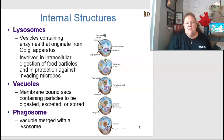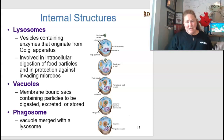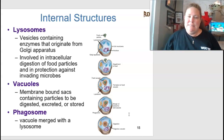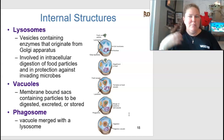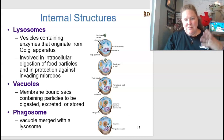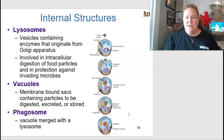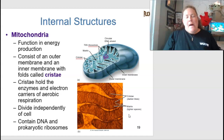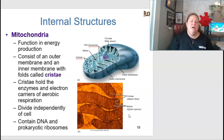Lysosomes are vesicles containing enzymes that originate from the Golgi apparatus. They are involved in intracellular digestion of food particles and protection against invading microbes. Vacuoles are membrane-bound sacs containing particles to be digested, excreted, or stored. The phagosome is a vacuole that has merged with a lysosome, functioning like a Pac-Man to engulf and digest material.